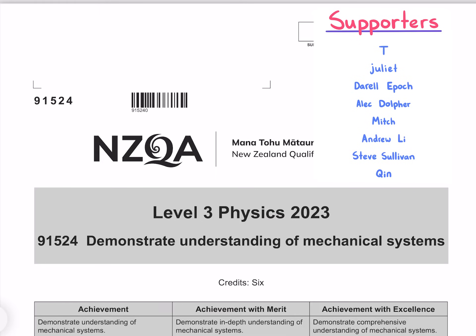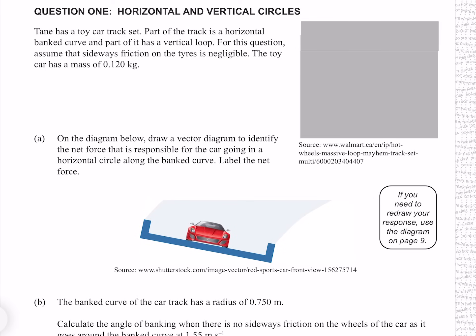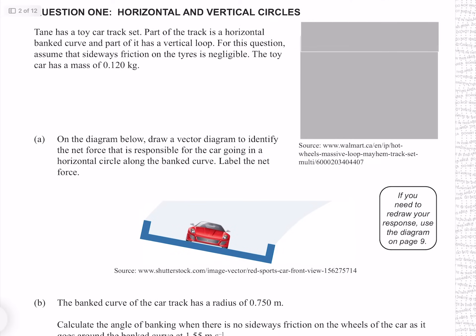In this video I'll be going through the 2023 mechanical systems paper. Question 1. Tane has a toy car track set. Part of the track is a horizontal banked curve and part of it has a vertical loop. For this question, assume that sideways friction on the tires is negligible. The toy car has a mass of 0.120 kg.